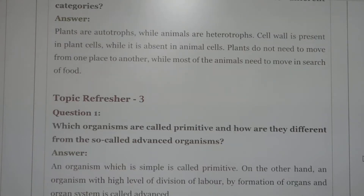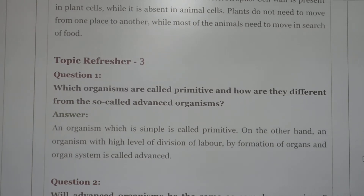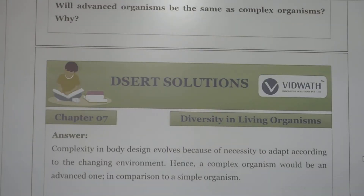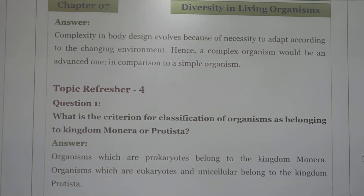Next question: which organisms are called primitive and how are they different from so-called advanced organisms? An organism which is simple in body design is called primitive. On the other hand, an organism with highly developed division of labor and the formation of organs and organ systems is called advanced. Complex body design evolves because of the necessary adaptations to the changing environment; hence complex organisms would be considered advanced compared to simple organisms.